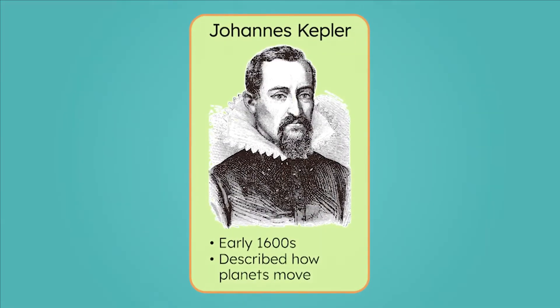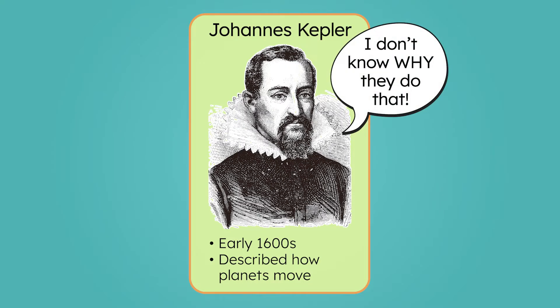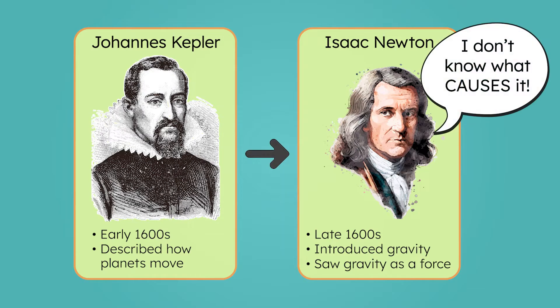Let's start by building a timeline of how our understanding of gravity has evolved. Kepler described how planets move with his three laws, but he didn't know why planets follow these paths. Then Newton connected Kepler's observations to a universal force — gravity. Newton saw gravity as a force, an invisible rope pulling objects together. His laws explained planetary motion and tides, but Newton never explained what caused gravity.